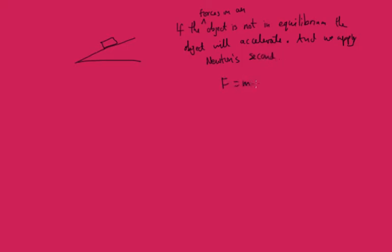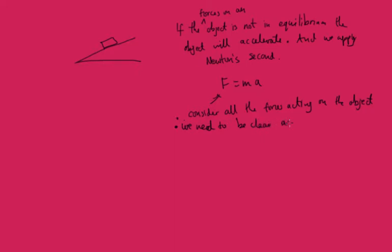That's F equals MA. For the force, we need to consider all the forces acting on the object. We also need to be clear as to the direction of motion. If you think about our box, you could be pulling it up the slope or down the slope, so the direction of motion will be parallel to the slope — it's not suddenly going to float away into space. You need to be clear about what direction things are moving.